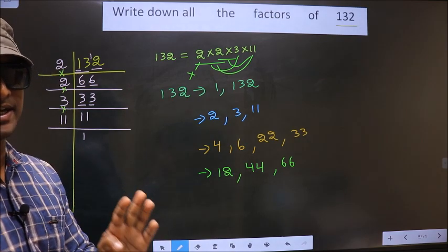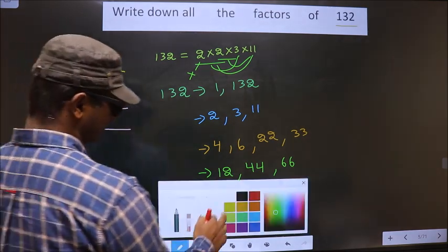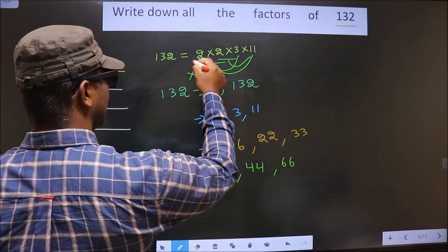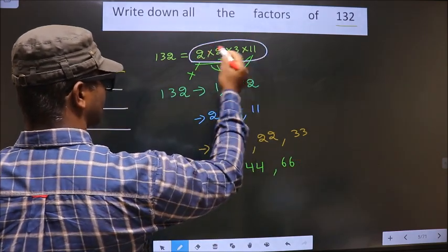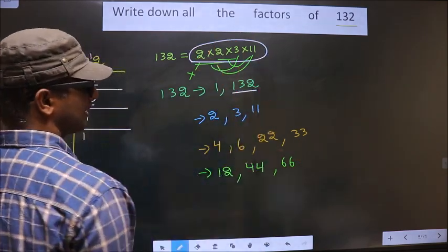Now you take 4 numbers at a time. So if we take all the 4 numbers, we get 132 itself.